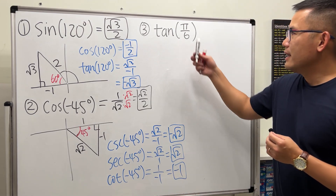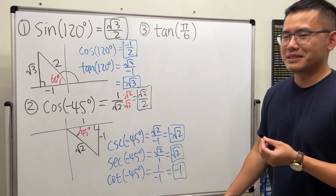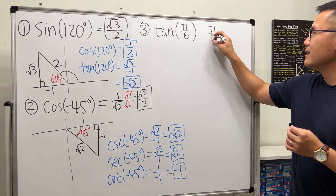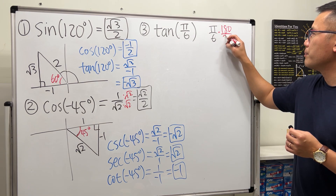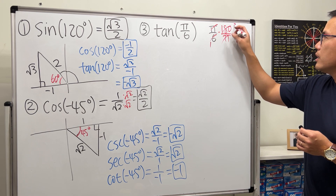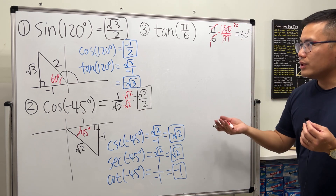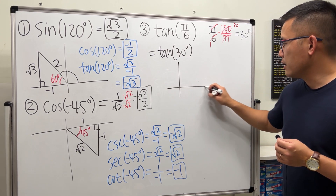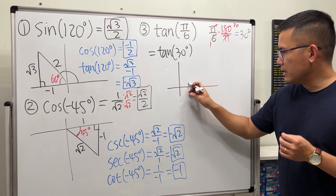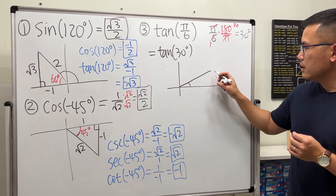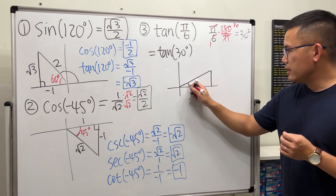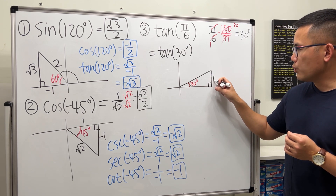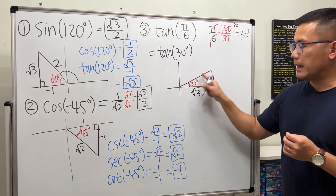Now tangent of π/6. It's always easier to work in degrees, so let's convert: π/6 multiplied by 180/π — the π's cancel, and 180 divided by 6 gives 30 degrees. So this is the same as tangent of 30 degrees. 30 degrees is positive and just a little past the x-axis. Draw the terminal side and go straight down to form the reference triangle.